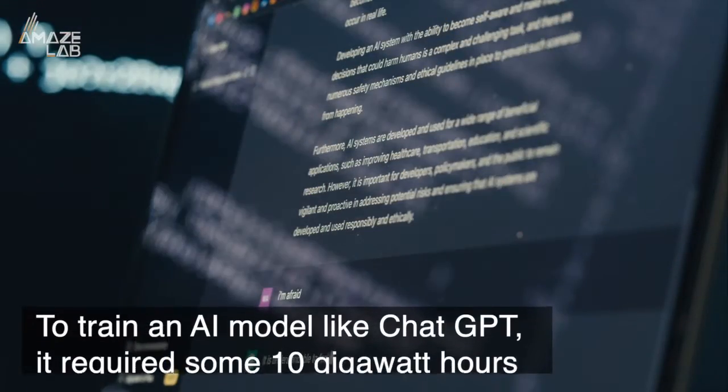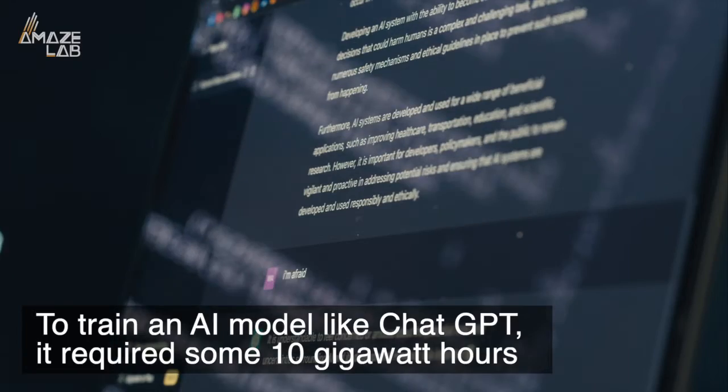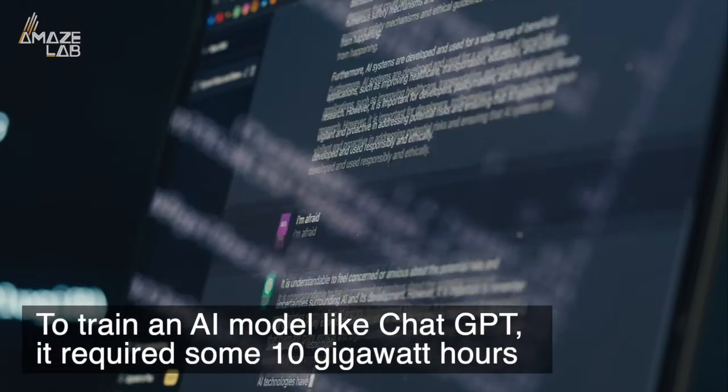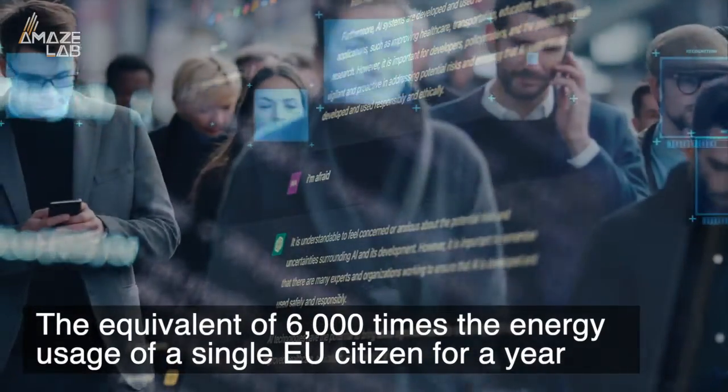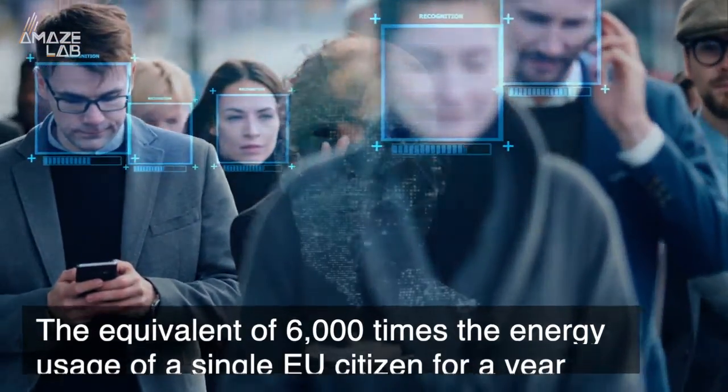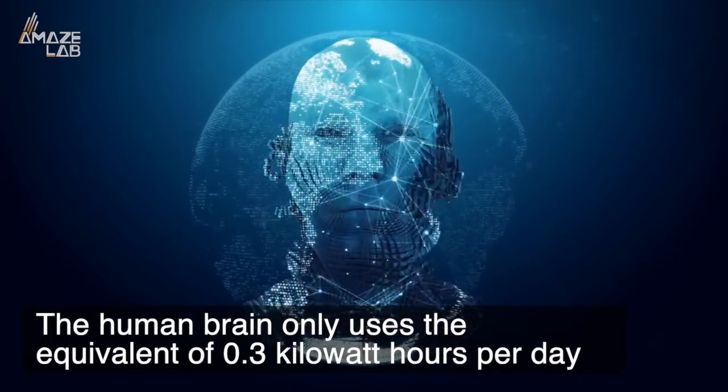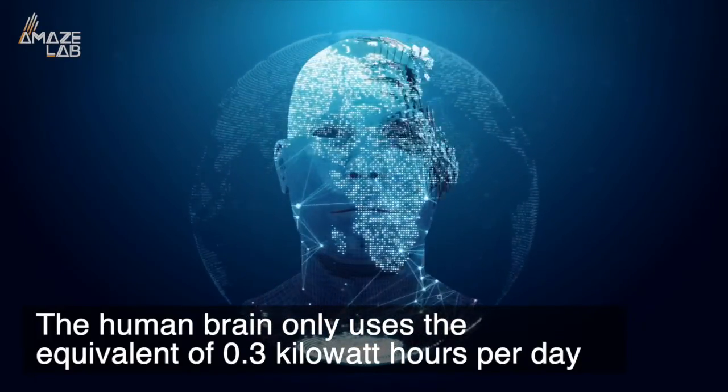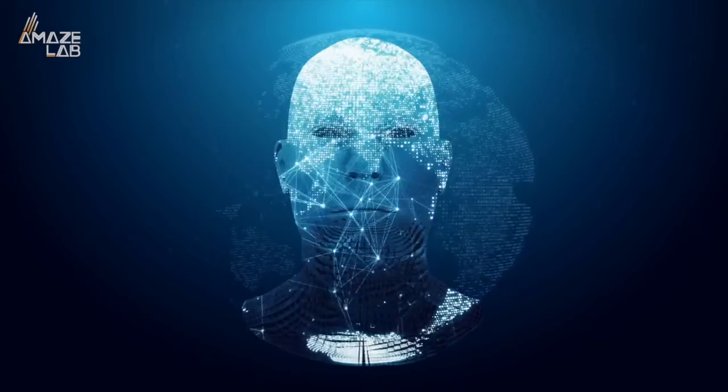For reference, Final Spark says that to train an AI model like ChatGPT, it required some 10 gigawatt hours, the equivalent of 6,000 times the energy usage of a single EU citizen for a year. Science Alert reports that the human brain only uses the equivalent of 0.3 kilowatt hours per day, a fraction of a fraction of that.